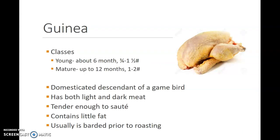Guinea is also broken into two classes. You have young, about six months old, three quarters to one and a half pounds on the average, and mature guinea that are up to twelve months old, one to two pounds on the average. They are actually a descendant of the game birds. They have both light and dark meat, and the meat is tender enough to sauté, but it does have a good bit of flavor. It contains little fat and is usually barded prior to roasting because it is so lean.